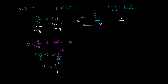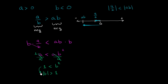Another way we could think about this: if 1 is less than b squared, that means the absolute value of b is going to be greater than 1. So this means that the absolute value of b is greater than 1. Let's be careful here — how did we get from 1 < b² to that conclusion?